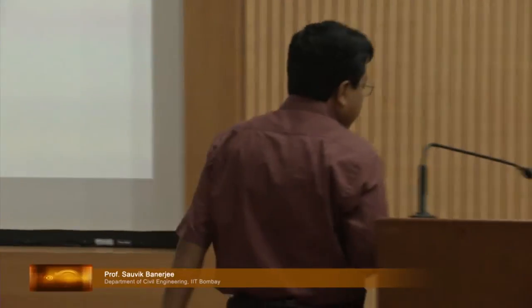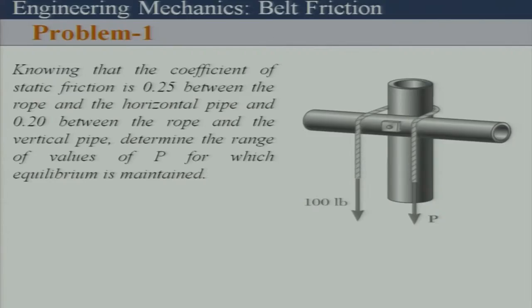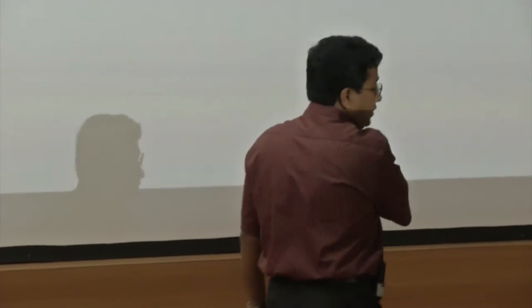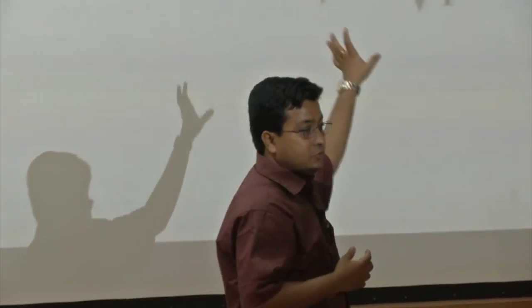Let's solve the impending motion upward case — that is, just holding the hundred-pound load. If we just want to hold the load, P is trying to go up. It is clear from the similar problem we have solved: when trying to hold the load, P will be less, and when trying to pull it down, P will be large.